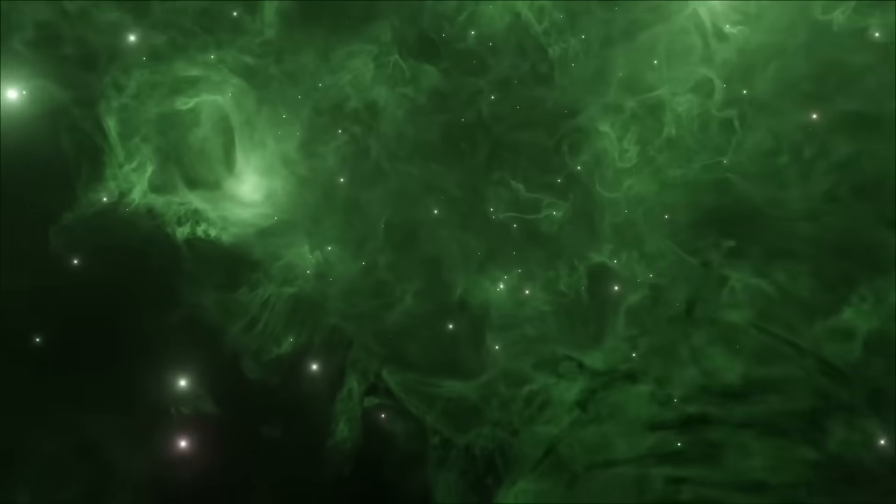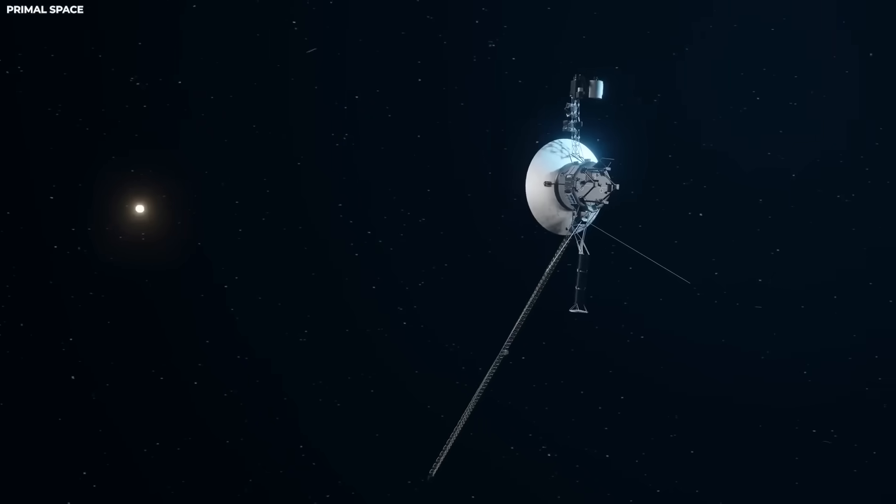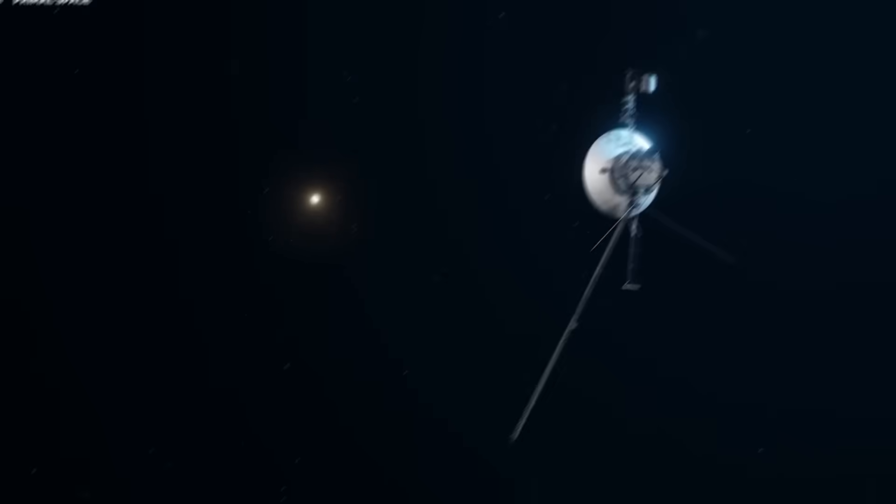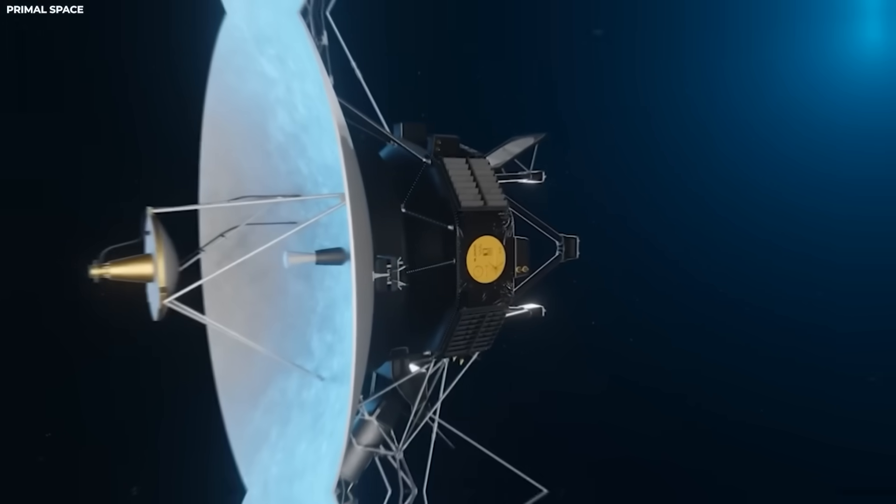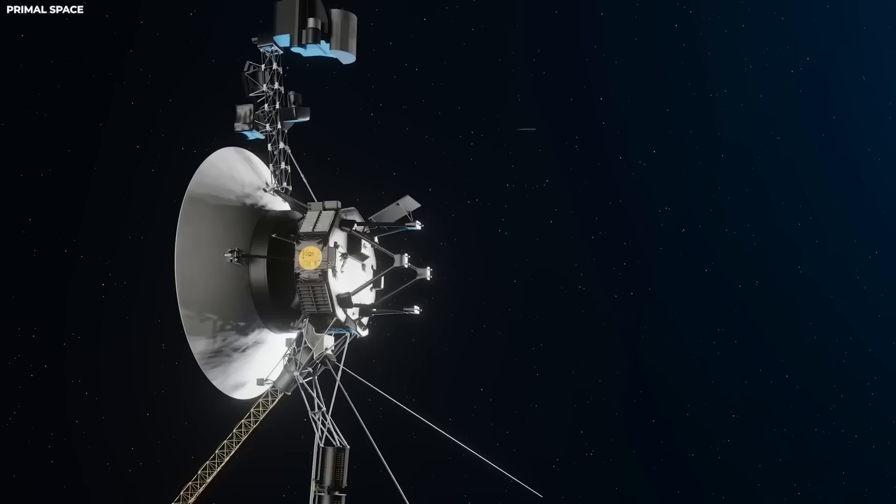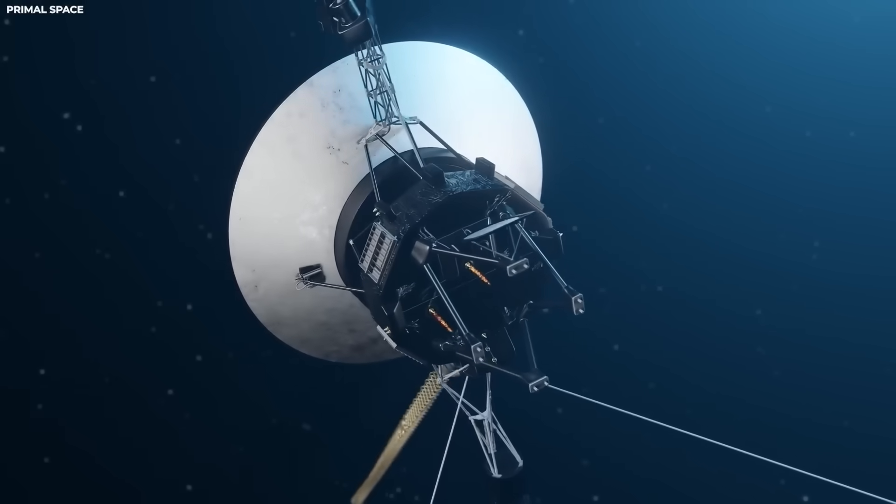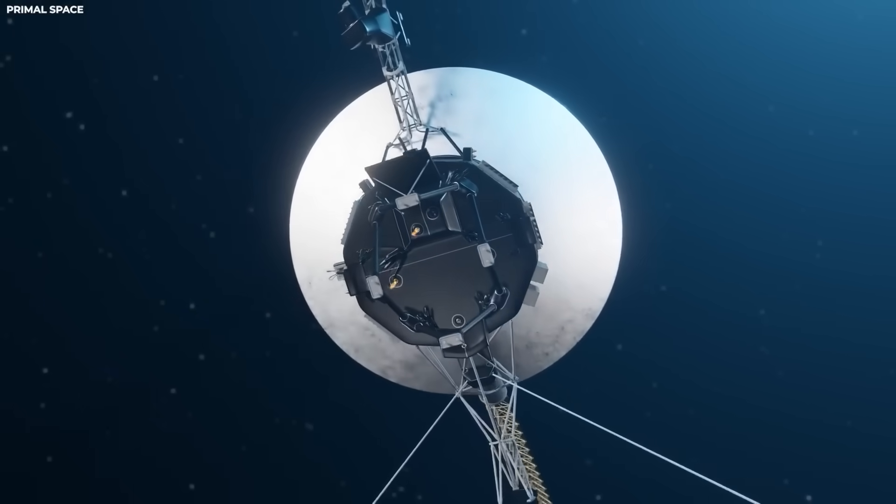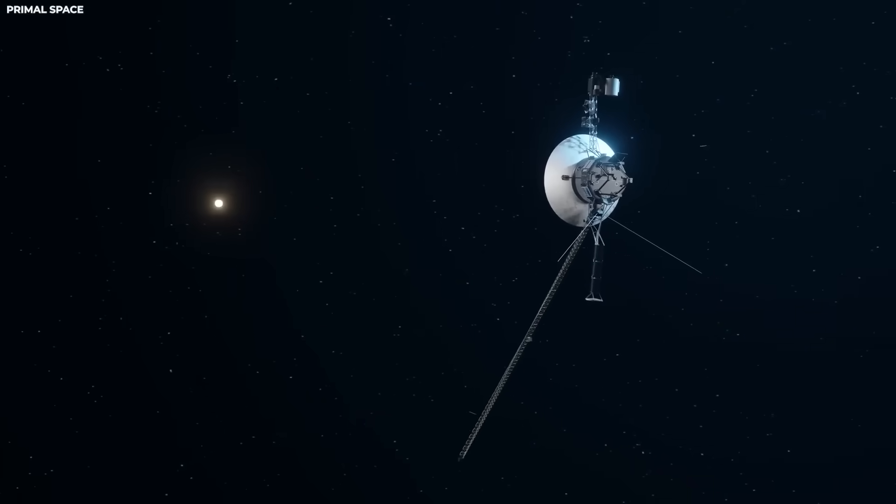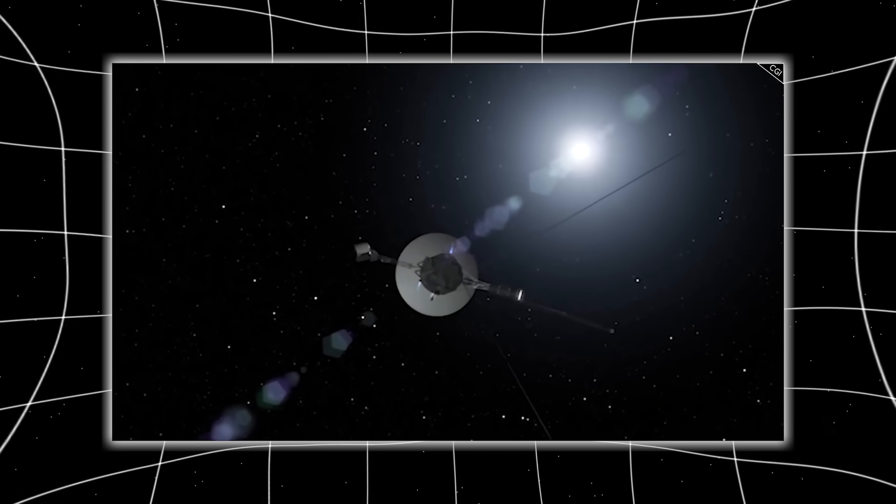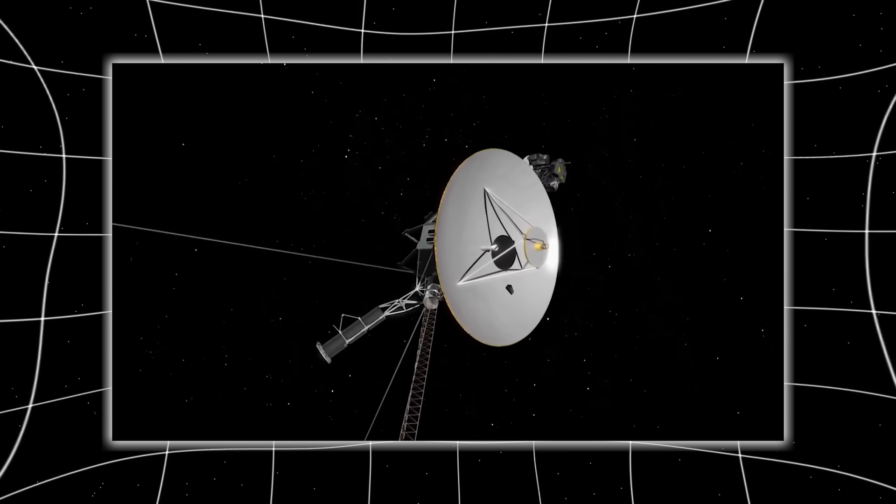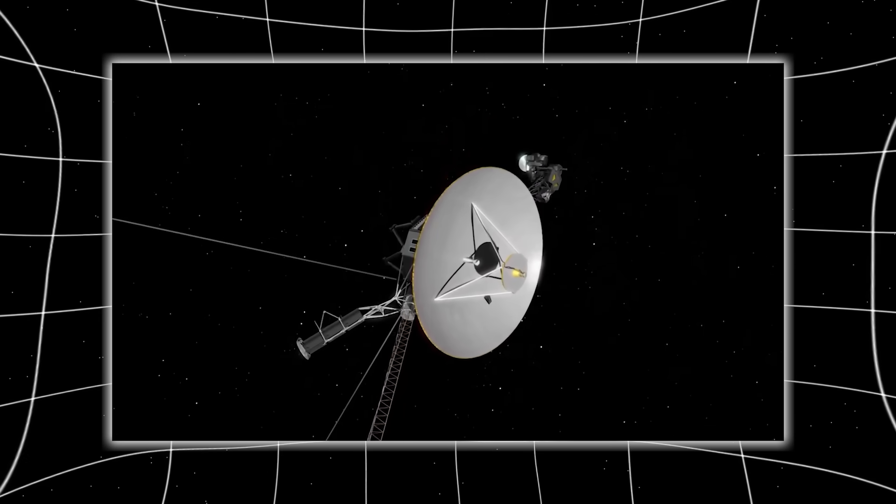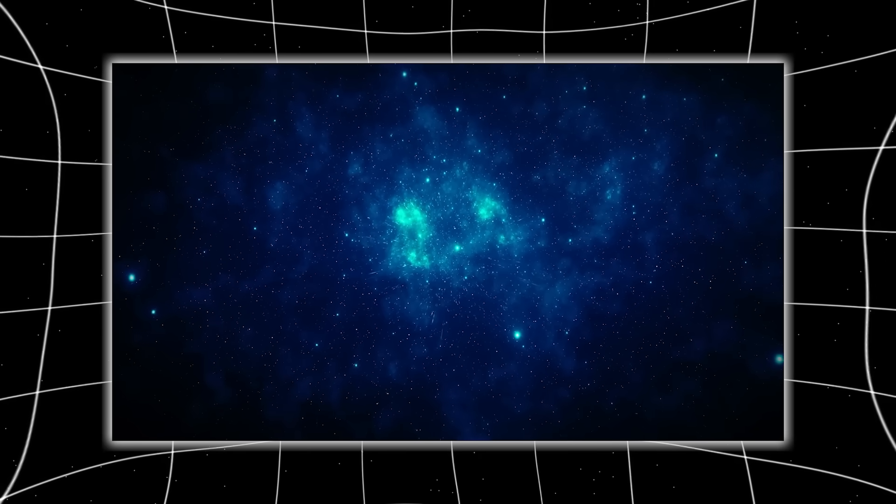Then came the transmission glitch. Voyager 1's antenna, which hadn't moved in over a decade, suddenly reoriented itself by half a degree. The maneuver was tiny, almost imperceptible, yet it required a deliberate command from its attitude thrusters, commands that had not been sent. The spacecraft had turned back, not toward the sun, but toward the direction of the magnetic flux it had been detecting for months. And when it did, the data changed.